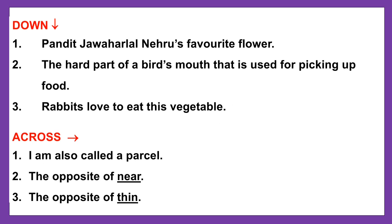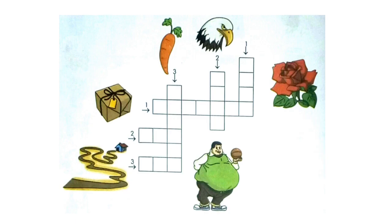Children, you have to fill in the answer of the first three clues in the downward direction. Our first clue is Pandit Jawaharlal Nehru's favourite flower. Look at the picture and find the answer. Yes, it's Rose. R, O, S, E. Rose.